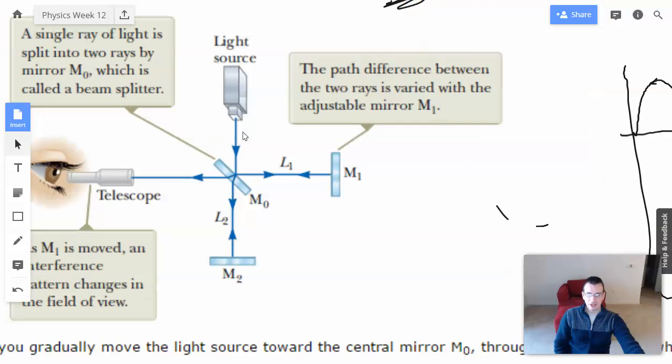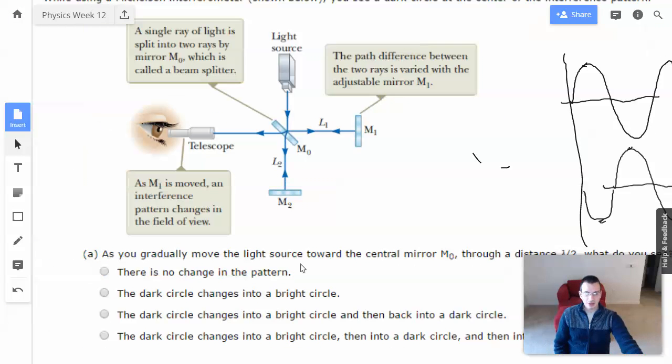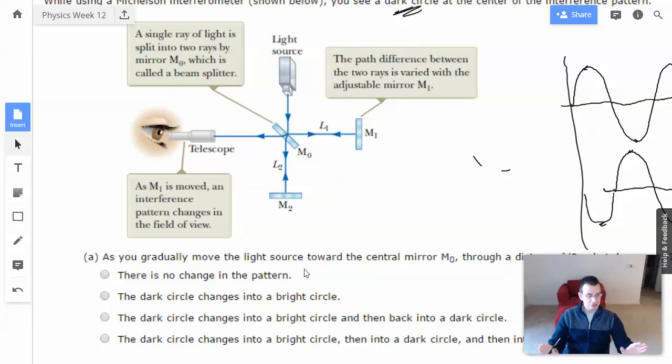One way to think of it is you have two waves here already. You actually have probably billions of waves, far more. Not important, you have a lot of waves here, and before it splits it off into two groups, they're all together. So when you're moving them together, you're not going to get any difference between the two. It doesn't matter if you move the light source. Everything is going to stay the same. So there will be no change in the pattern.